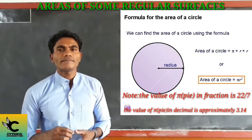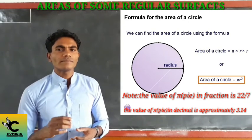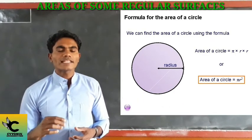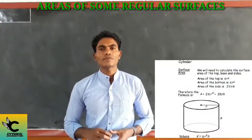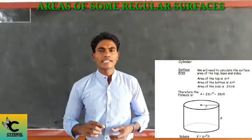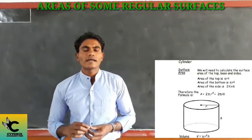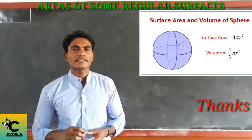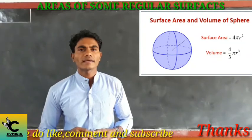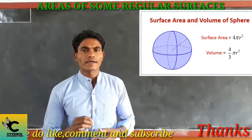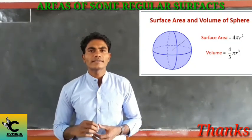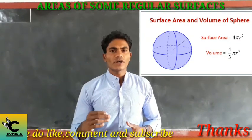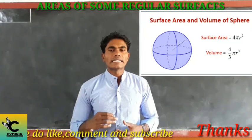Another formula is the surface area of a cylinder: Surface Area = 2π × radius × height. The last one is the surface area of a sphere: Surface Area = 4π × r². So in this class, students will learn the basic units and formulas for calculating area and surface area.